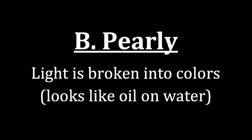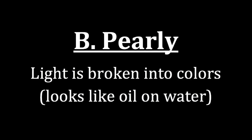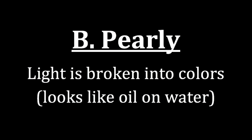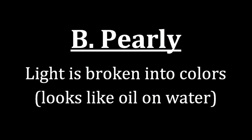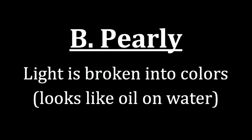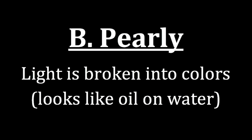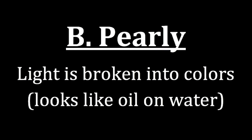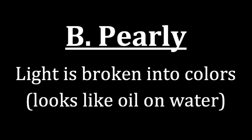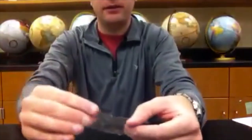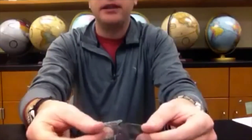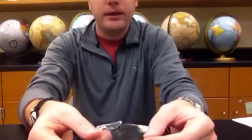The second in the group of non-metallic lusters is pearly. This one is more difficult to see because what we're actually looking at is light being broken into colors. When we look at a mineral that has pearly luster, we should see something that looks like oil on water — kind of the colors floating on the surface. It's next to impossible to see in this video because all you're seeing, due to its reflectivity, is the white light from the ceiling.